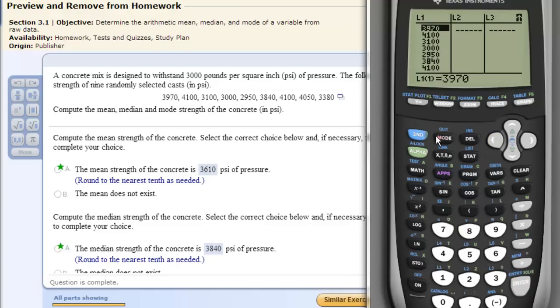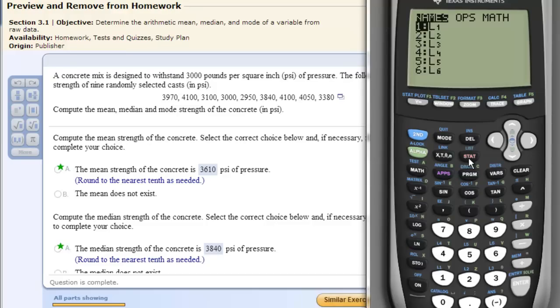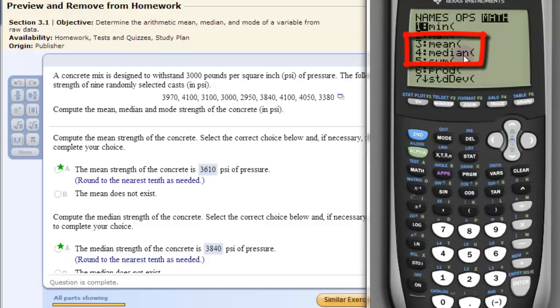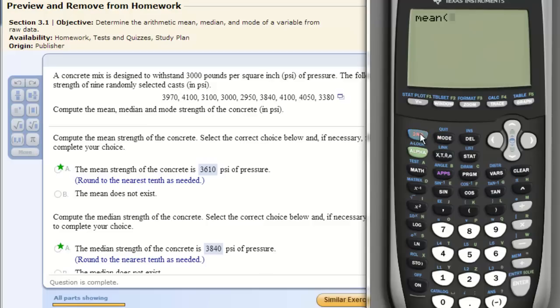Once you've done that, hit second quit. Then we click second and STAT again to get us to the list. Then we go over to math. This is where we see mean and median. So I can go down to mean, and our information was in list one. So if I click second and then L1 right there, number one, parenthesis, that is the mean.